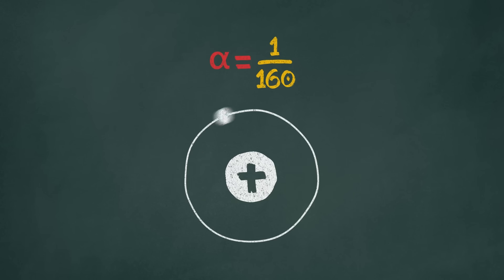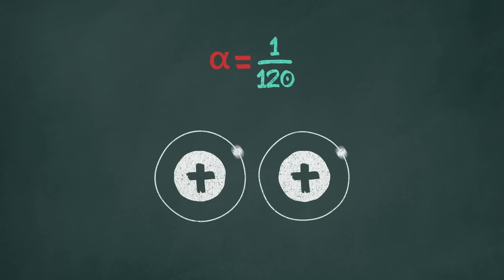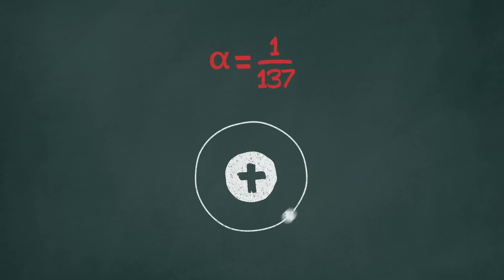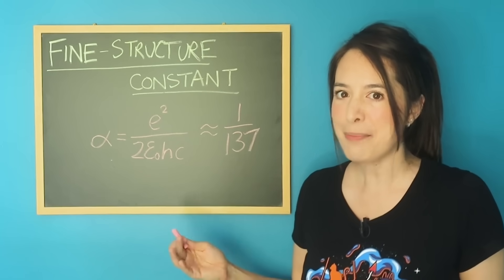If alpha were just a tiny bit weaker, electrons wouldn't bind to the nucleus at all. But if alpha were just a tiny bit stronger, electrons couldn't move freely, and no chemistry would happen. It seems to lie in this perfect Goldilocks zone for life to exist. How did that happen?